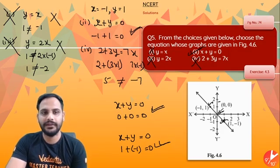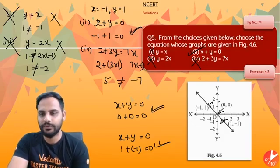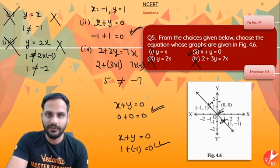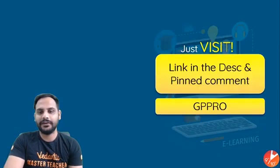This is how this question will be solved. So just put the values, all the three points which are given over here, they must satisfy the equation. That is the concept over here. So this is how it will be solved.